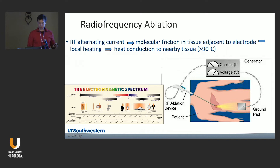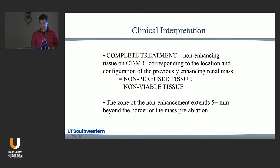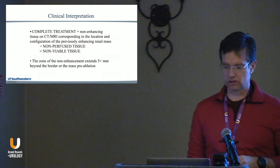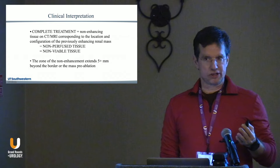You're either going to cook or freeze the tumor. A complete treatment in kidney ablation is defined as non-enhancing tissue on CT or MRI corresponding to the location and configuration of the previously enhancing tumor. Non-perfused equals non-viable — that has been established in the literature after many debates in the first decade of my career. The ablation zone should be larger than the original tumor to confirm full coverage.